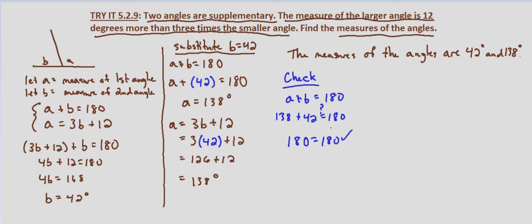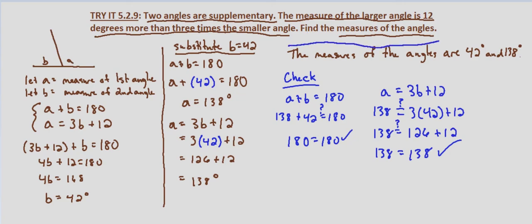In our second equation, we have a equals 3b plus 12. So we want to know, does 138 equal 3 times 42 plus 12? So does 138 equal 3 times 42 is 126, plus 12? And we do end up with 138 equals 138, which checks our solution. So the measures of the angles are indeed 42 degrees and 138 degrees.